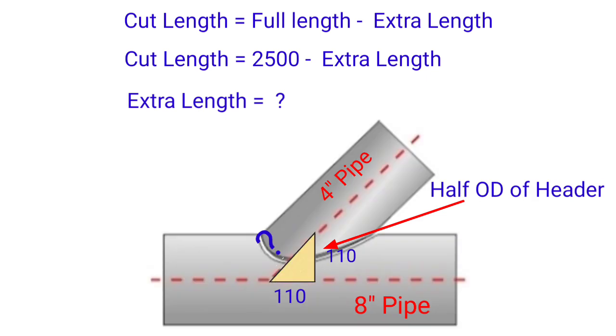By using trigonometry method: 8 inch pipe half OD equals 110mm. So we put set and run 110mm. We need hypotenuse length.